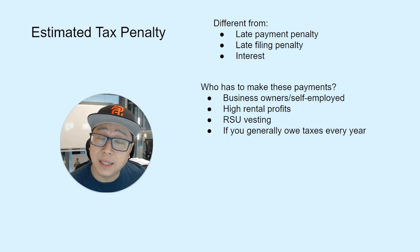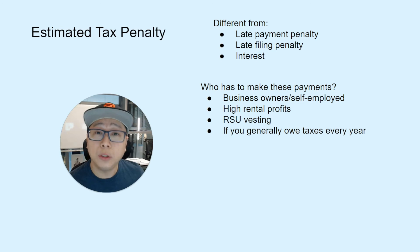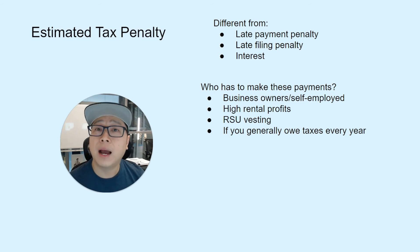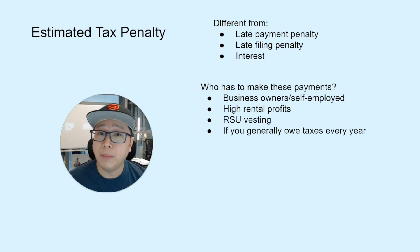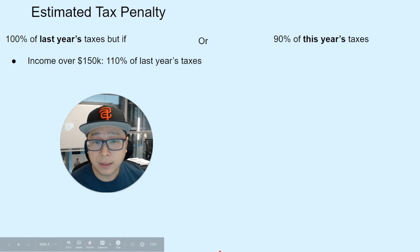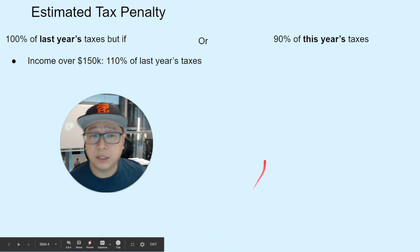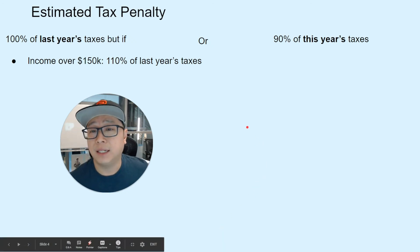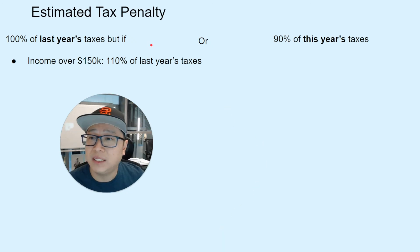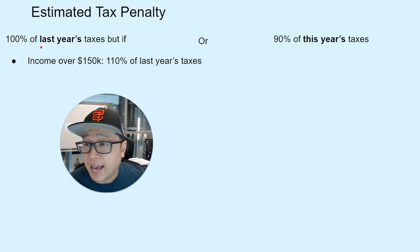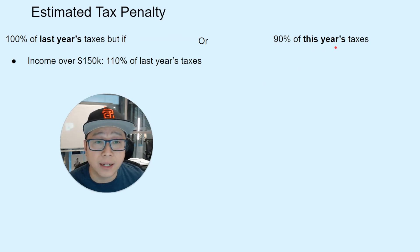There are actually two calculations you can do to figure out how much you should prepay to avoid a penalty. I like to separate these as a 'last year calculation' and a 'this year calculation.'